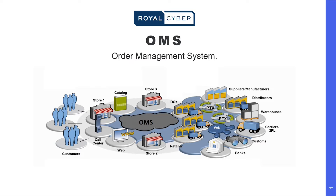IBM Sterling Order Management is a software-as-a-service offering designed for organizations seeking foundational order management capabilities for their e-commerce initiatives. It can be used to manage complexities regarding supply chain initiatives and order management by cost-effectively managing global product and service fulfillment across the extended enterprise. Sterling Order Management delivers a seamless order management experience across all channels, which creates a complete shopping experience.